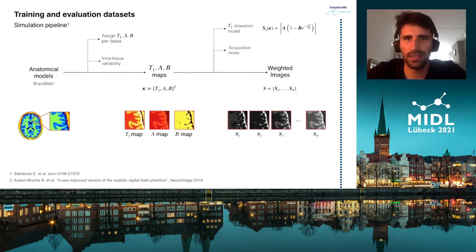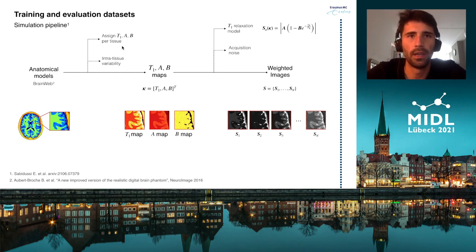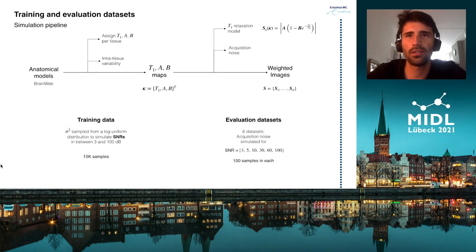We use simulated datasets to train and evaluate the networks. These datasets are composed of pairs of simulated ground truth parameter maps kappa and simulated weighted images s. Kappa was constructed by assigning different A, B, and T1 values to each tissue in a digital anatomical model. Intratissue variability was simulated with additive Gaussian noise. S was simulated with the T1 relaxation model using kappa and a series of inversion times. In the training set, samples were corrupted with Gaussian noise with varying SNR levels to simulate acquisition noise.